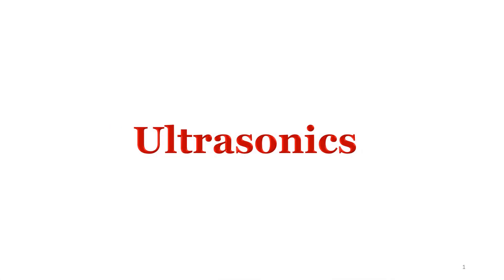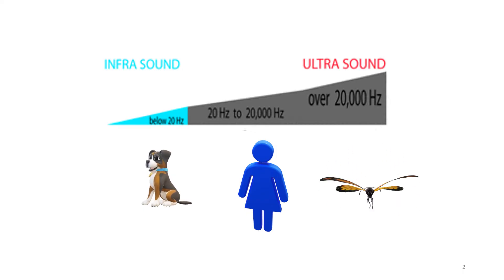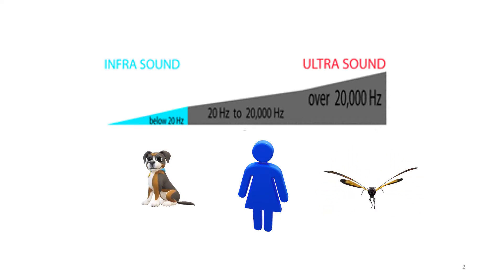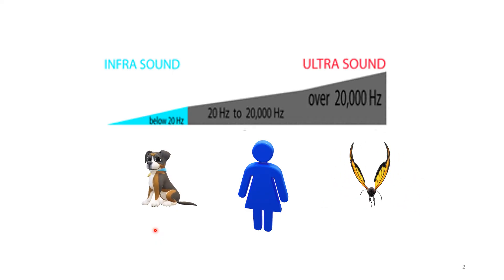Hello learners, greetings of the day. This video has been designed to discuss one of the sound waves — ultrasonics. Depending upon frequency, sound waves are divided into three categories. Sound waves having frequency less than 20 hertz are known as infrasonic sounds. Creatures like cats, dogs, and various animals can hear that frequency. Sound waves having frequency from 20 hertz to 20 kilohertz are termed as the audible range — we human beings are able to hear sound waves of that frequency.